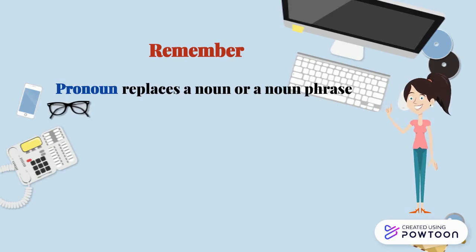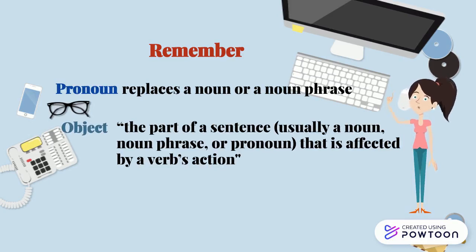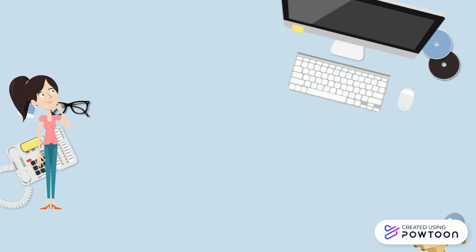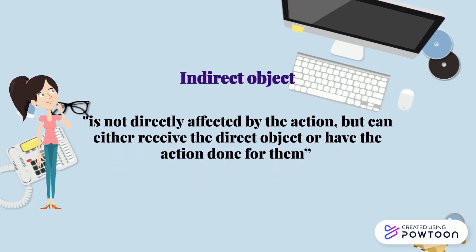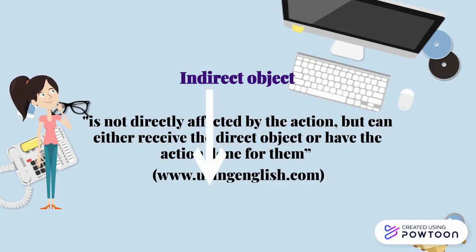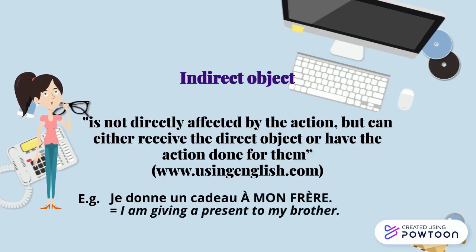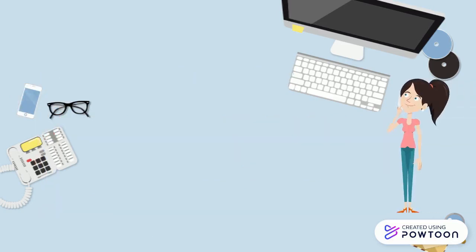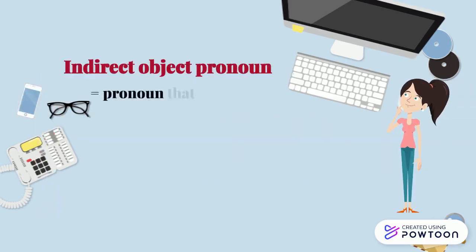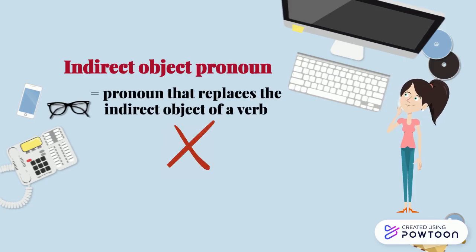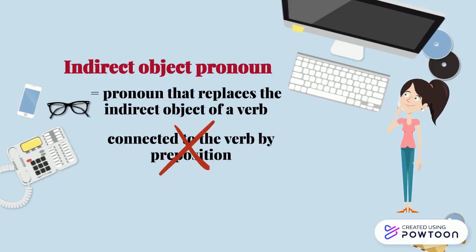Remember, a pronoun replaces a noun or a noun phrase. The object is the part of a sentence — usually a noun, noun phrase, or pronoun — that is affected by a verb's action. The indirect object of a verb is not directly affected by the action, but can either receive the direct object or have the action done for them. It is called indirect notably because it is connected to the verb by a preposition. For instance, 'je donne un cadeau à mon frère' — I am giving a present to my brother. So, the indirect object pronoun replaces the indirect object of a verb, but it is not connected to the verb by a preposition, unlike a noun or a noun phrase.